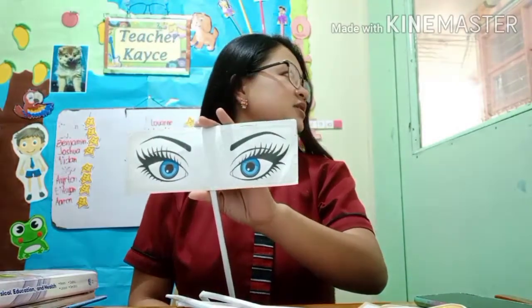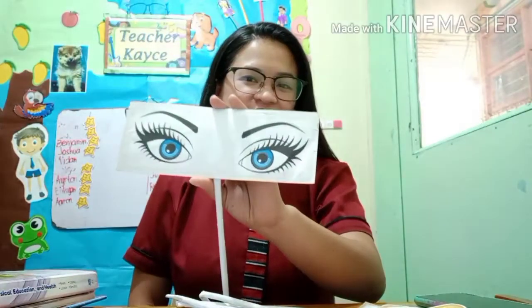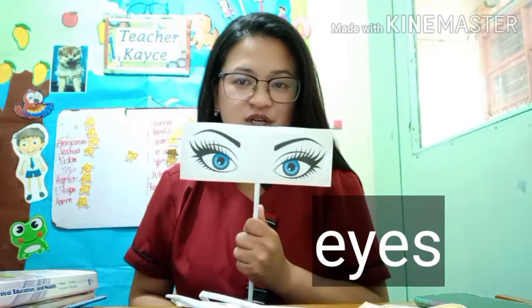I have here some pictures. What can you see in this picture? You see there is an eyes. So if teacher will show you this picture, I want you to look at her. If I show you this picture, look at teacher. Okay, very good.